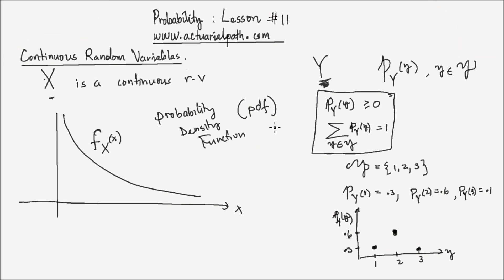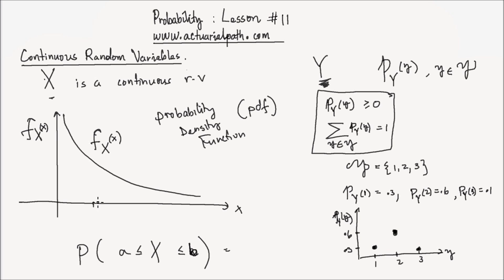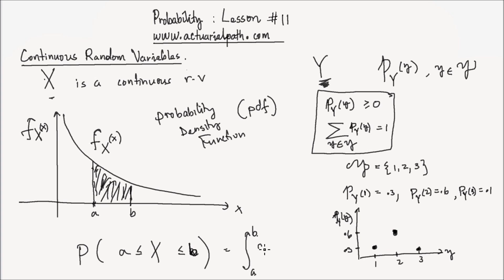The PDF of a continuous random variable describes the probabilistic property of that random variable. Often what we are interested in, when we have a continuous random variable, is the probability that x takes a value between points a and b. That probability is equal to the area between a and b under the function f of x, which is the integral from a to b of f of x dx.